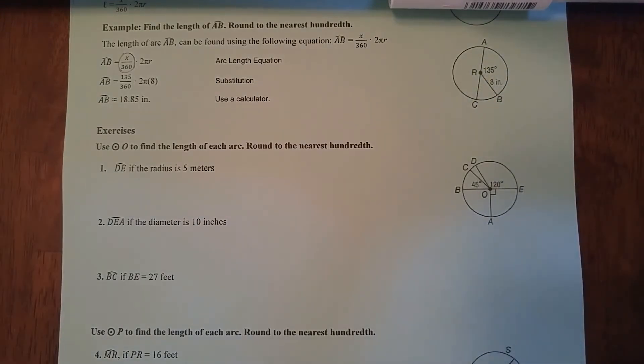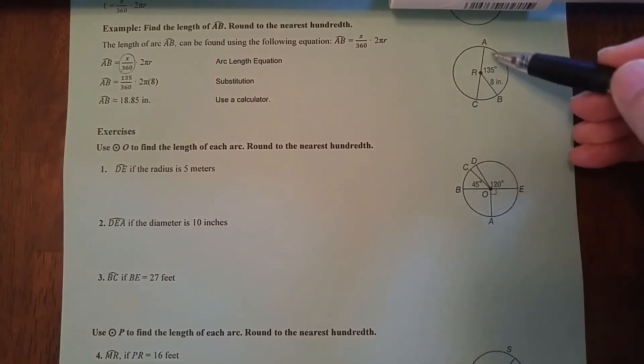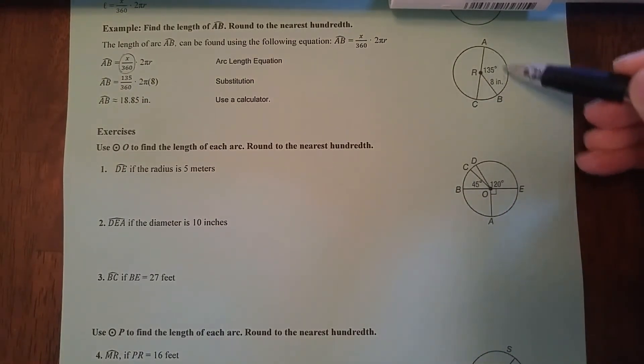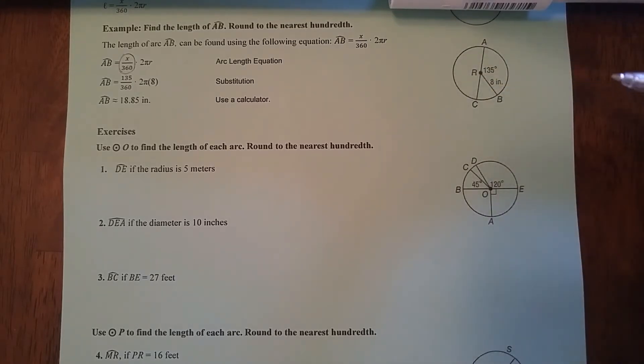Next, you have to multiply that by what the actual circumference of the circle is. The formula for circumference of a circle, we have πD, but we also have 2πR. So we're going to multiply what this percent is times the entire circumference, and that's going to tell us what the arc is.